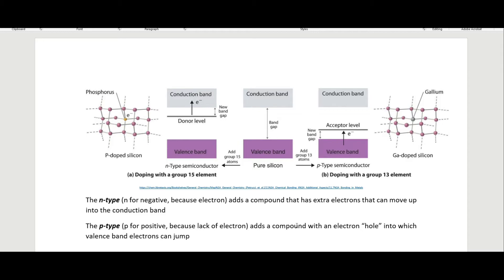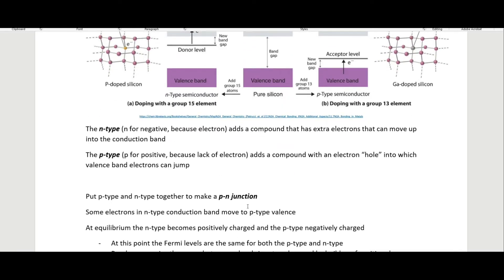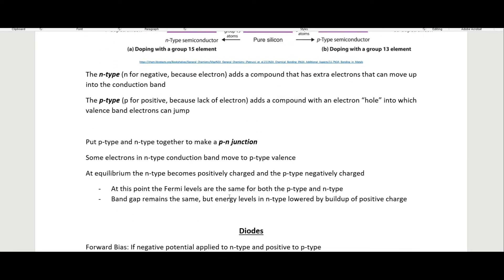P-type semiconductors — 'p' for positive — bring an electron hole. Electrons from the valence band can promote up into an acceptor level, which has a smaller band gap than between the pure silicon valence and conduction bands. Adding these doping agents allows you to make a material into more of a semiconductor, and then we can put p-type and n-type together to make a p-n junction.